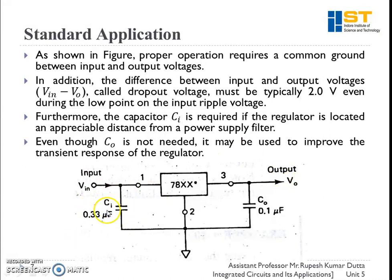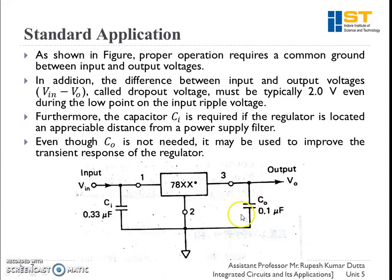The capacitor C_I is required if the regulator is located at an appreciable distance from the power supply filter. C_O may or may not be used depending on the transient response requirement of the regulator.